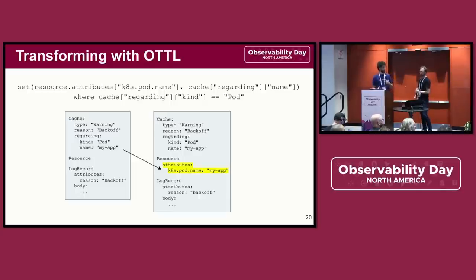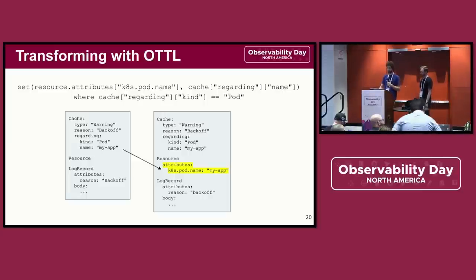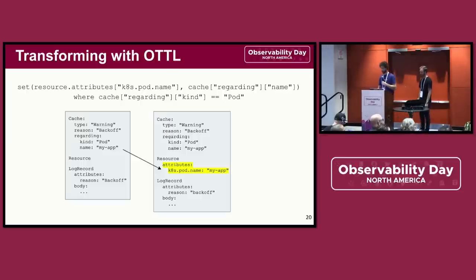Now what if this event isn't actually for a pod? If that was the case, we wouldn't want to execute this statement. So what we can do is add a where clause to the statement to make sure it's only executed if the event really is for a pod. The where clause acts as a decision maker — if the condition is met, the statement is executed; otherwise, the statement is skipped.